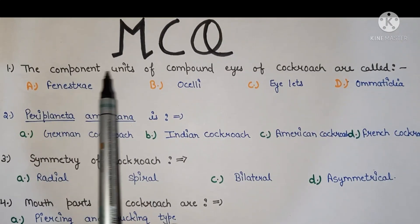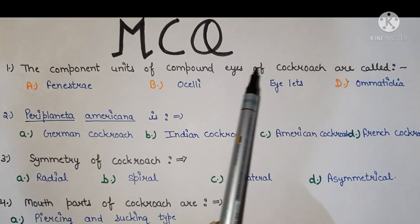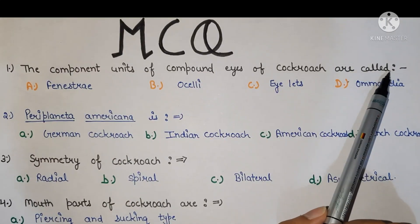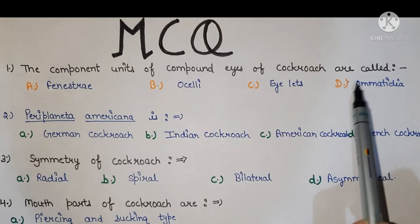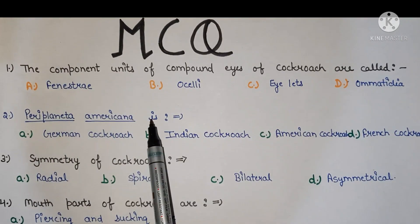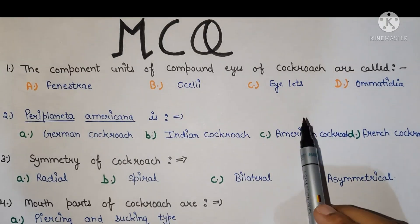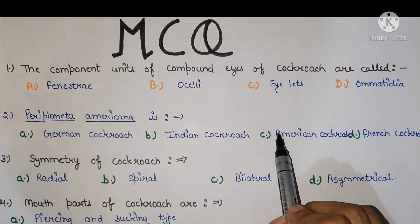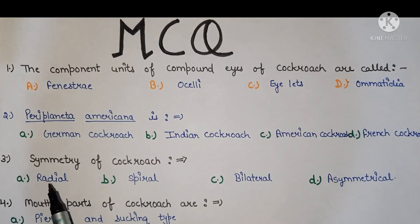The component units of compound eyes of cockroach are called ometidia. Second, Periplaneta Americana is American cockroach. Third,